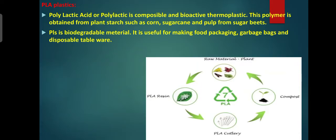Scientists have thought about alternatives to synthetic plastics and have found polylactic acid, or PLA. PLA — polylactic acid or polylactate — is a compostable and bioactive thermoplastic. This polymer is derived from plant starch such as corn, sugar cane, and beet from sugar beet. Polylactic acid is a biodegradable material useful for making food packaging, garbage bags and disposable tableware.